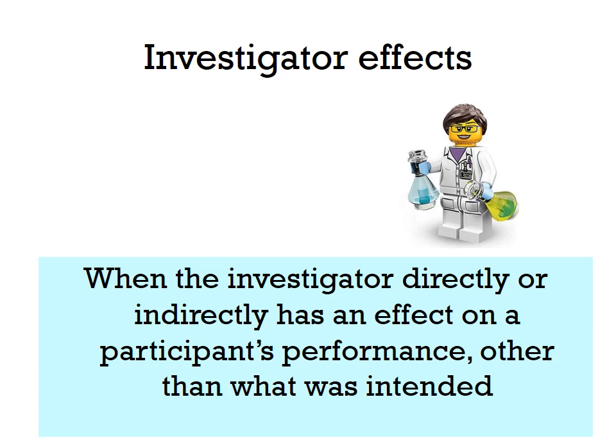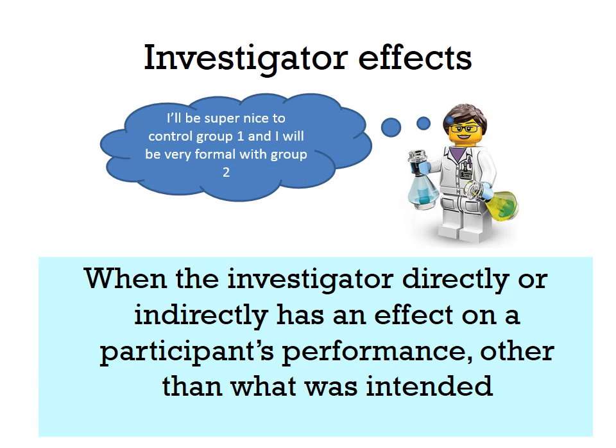Investigator effects are also something that can affect our results. An investigator effect is when the investigator directly or indirectly affects a participant's performance beyond what was intended. For example, a researcher might be super nice to one control group but very formal with another, and that difference in treatment can affect the results that both groups produce.